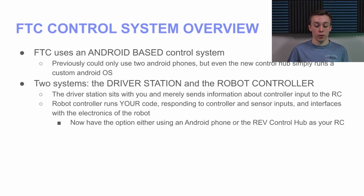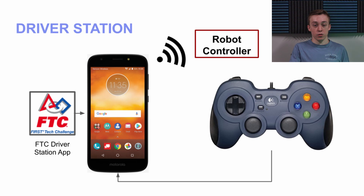That's how you're able to have code that is controlled by humans. The robot controller can either be a REV Control Hub or a phone. Even though you don't really have to worry about the driver station as much, when issues come up it's really useful to have a concrete understanding of how things work and what the system is operating off of.